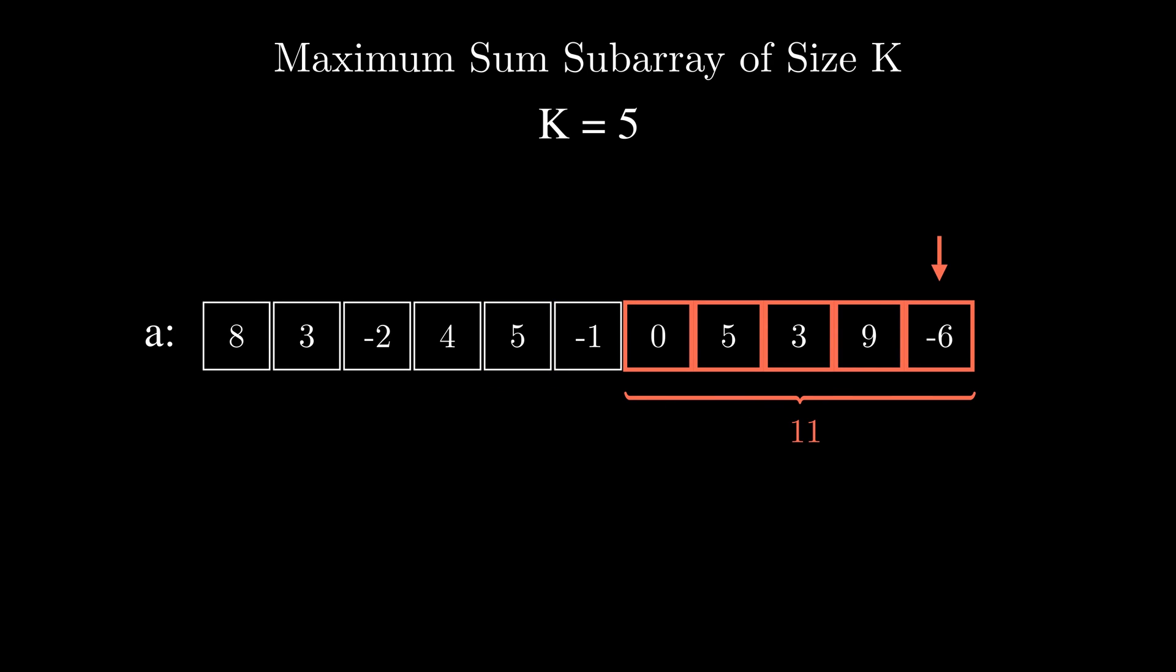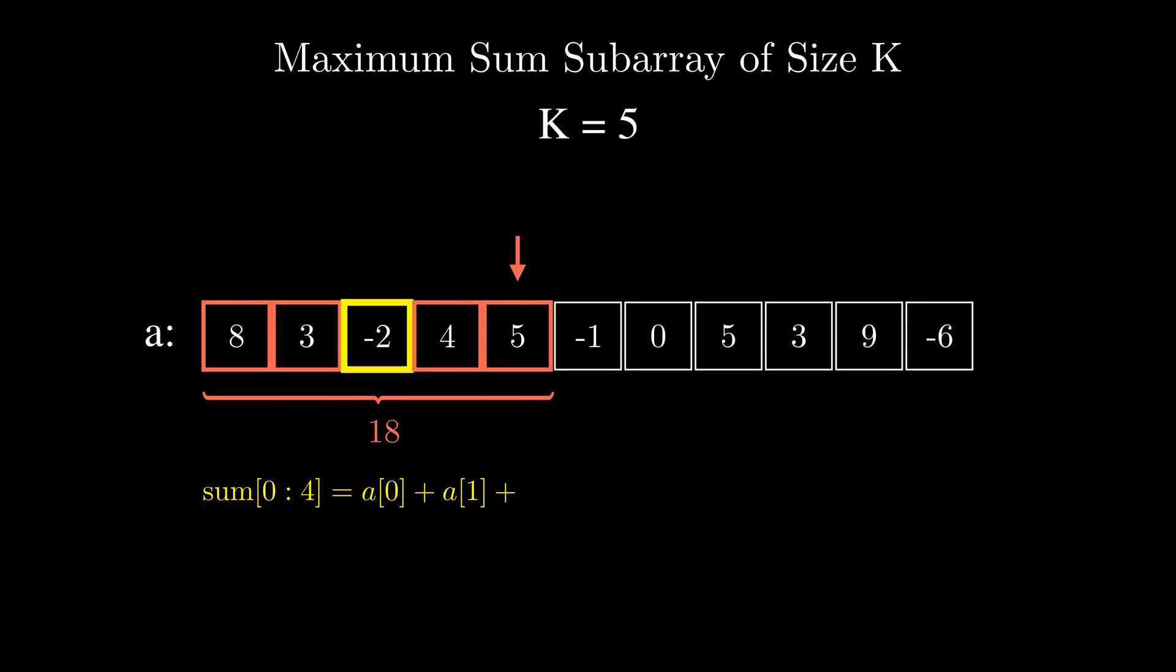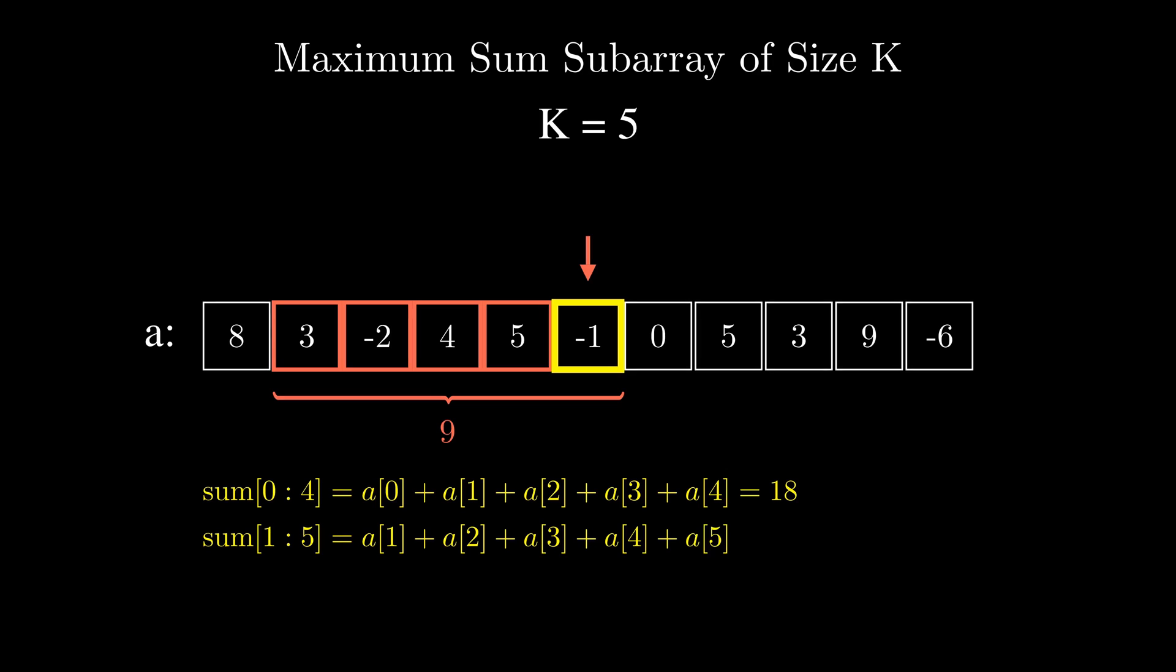In the case of this array we would start from index 4 and compute the sum of the first five numbers, then move to index 5 and compute the sum of these five numbers, then move to index 6 and so on.